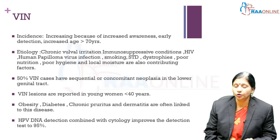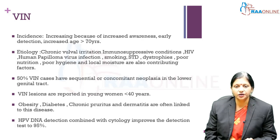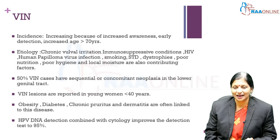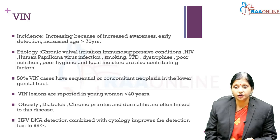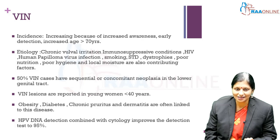VIN usual type is increasing in incidence due to increasing postmenopausal life expectancy with more women living beyond 70 years. Causes include chronic vulval irritation, HIV, HPV infection, smoking, sexually transmitted diseases, poor nutrition, poor hygiene, local moisture, and immunosuppressive conditions. Fifty percent of VIN cases have a sequential or concomitant neoplasia of another part of the genital tract. Other risk factors include obesity, diabetes, chronic dermatitis, and pruritus. Combining biopsy with HPV DNA detection increases diagnostic sensitivity and specificity.